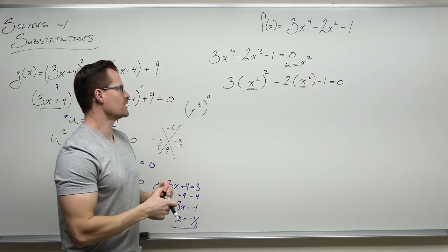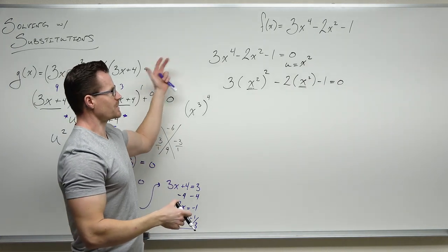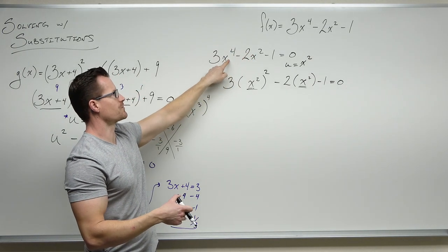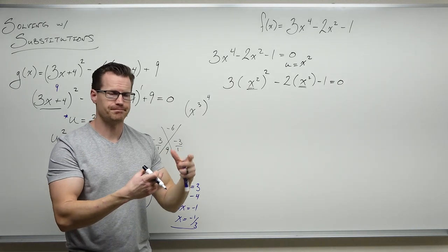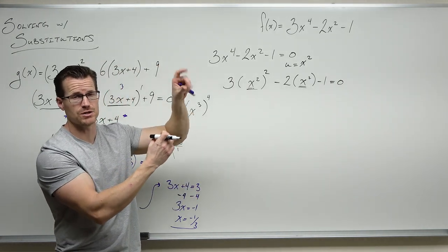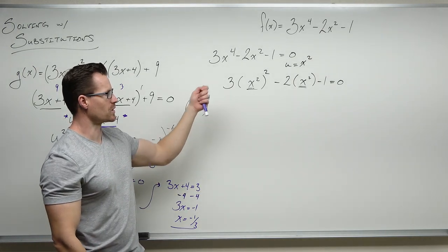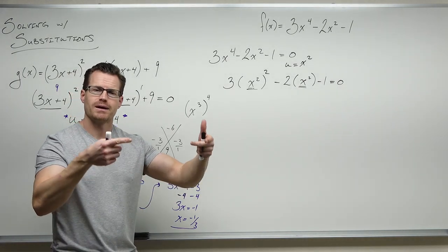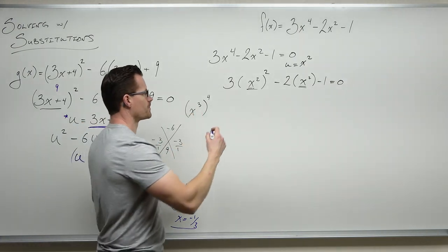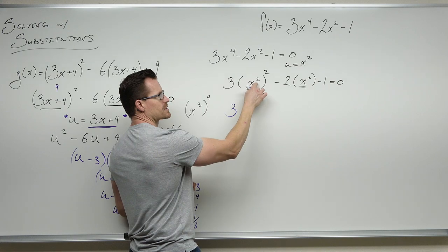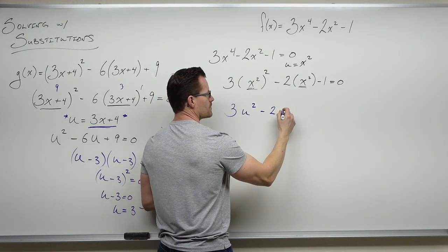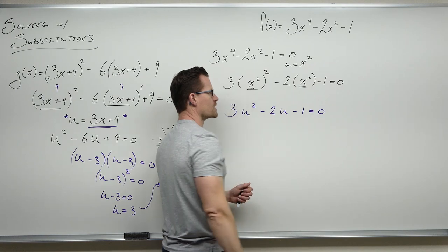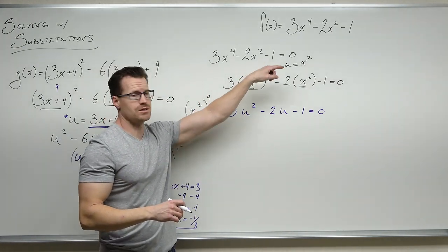Our substitution is x squared — we call that u. We said the first exponent is two times the second, so we can write the first term as (x squared) squared, since x squared squared is still x to the fourth, but represented as the same expression as the middle term. That's where we get our substitution: u equals x squared. We use it to get away from x's into u's, replacing x to the fourth with u squared and x squared with u — not the 3, not the minus 2, not the minus 1.